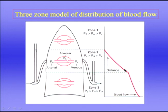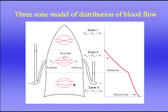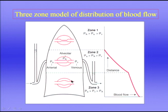In Zone 3, arterial pressure has increased further and venous pressure has also increased due to the hydrostatic gradient in the veins. Now venous pressure exceeds alveolar pressure, there is no Starling resistor effect, the capillaries are held open, and blood flow is determined in the usual way by arterial minus venous pressure. Blood flow increases down Zone 3 probably because of recruitment and distention of vessels — different from the reason in Zone 2.